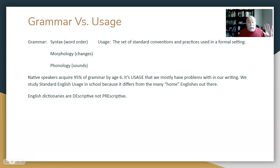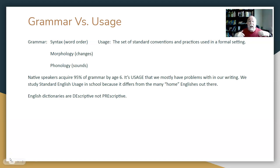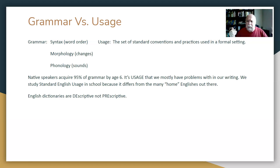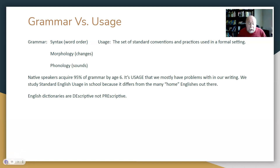That's a little recap for the second part of our history of the English language. We went through all this history for a reason — to tell you how we got to where we are and why we study English grammar, but mostly usage. Why do we have some things we do and some things we don't do? An educated person needs to know how to use the language in a professional setting, and that's what we're studying here.